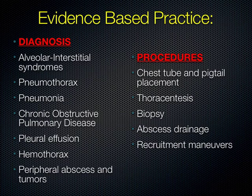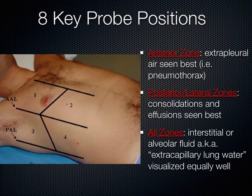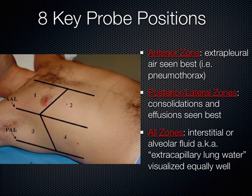There are some key probe positions which you'll be practicing today, but it's also a good habit to look at all eight key probe positions on the chest — four on each side. If you delineate the chest at the sternum, the anterior axillary line, and the posterior axillary line, you divide the chest into four areas on each side. You want to look at a representative area in each segment so that you get a good overall picture of what's going on.